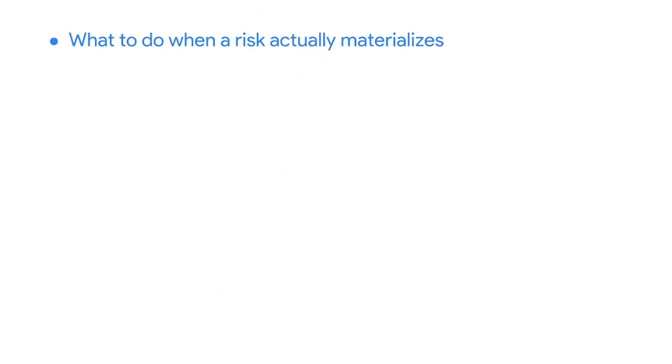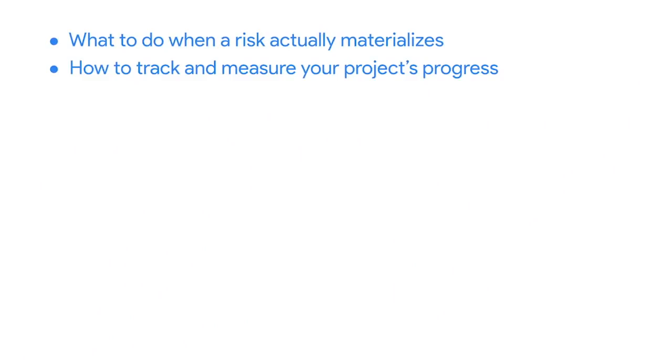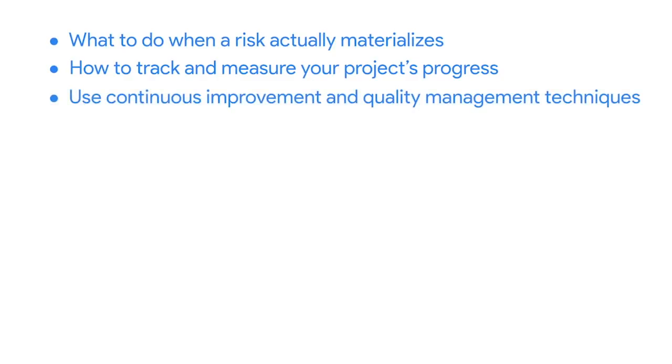First up, you'll learn more about risks and unforeseen changes to the project. If you've taken our previous courses, you might recall that change is inevitable. And to combat that, we've covered the concept of risk mitigation during the planning phase. And now we'll take it one step further and discuss what to do when a risk actually materializes. Next, I'll discuss tracking and quality.